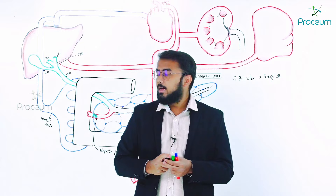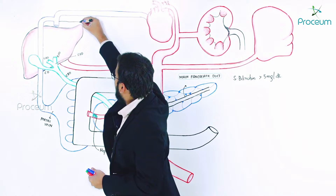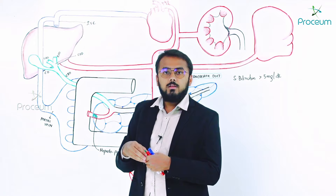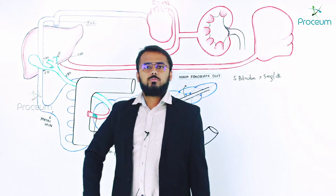The portal vein enters into the liver and drains into another vein — the inferior vena cava (IVC). The inferior vena cava then drains into the right atrium of the heart.